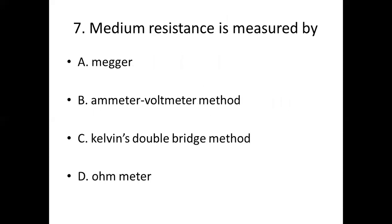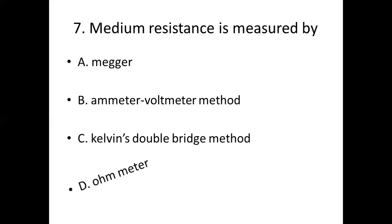Seventh bit. Medium resistance is measured by: Option A, megger. Option B, emitter voltmeter method. Option C, Kelvin's double bridge method. Option D, ohms meter. Answer: Option D, ohms meter.